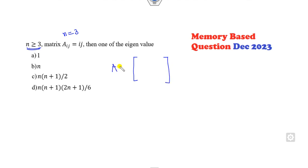So then what will be your answer? Your matrix A is a 3x3 matrix. So A_11 is 1, A_12 is 2, A_13 is 3. A_21 is 2, A_22 is 4, A_23 is 6. A_31 is 3, A_32 is 6, A_33 is 9.